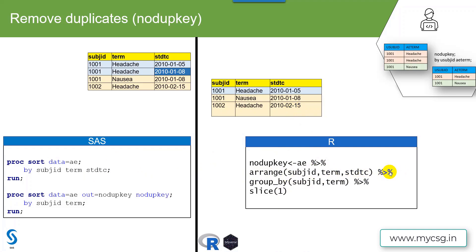Then the arranged dataset is passed into the group_by function, because we want to keep one record per subject ID and term. A group is created for 1001-headache, then 1001-nausea, then 1002-headache, and within the 1001-headache group there are two records. That grouped dataset is passed to the slice function, which subsets records based on position within each group. Here we ask for the first record within each group of subject ID and term.